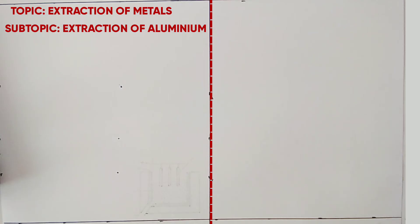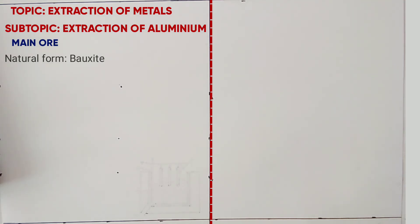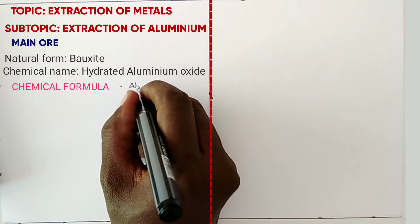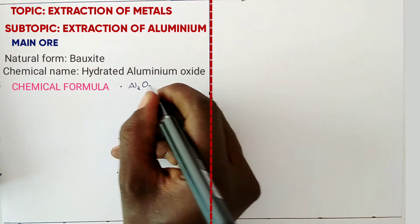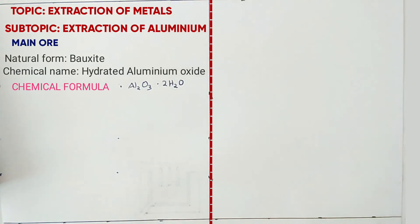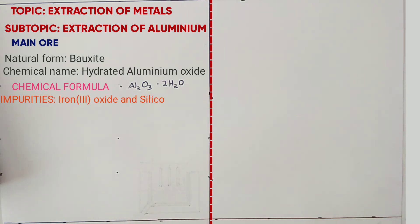We begin by looking at the main ore. The main ore in its natural form is called bauxite. The chemical name is called hydrated aluminium oxide. The chemical formula is Al2O3 with water. The impurities in this ore are iron(III) oxide and silicon(IV) oxide.